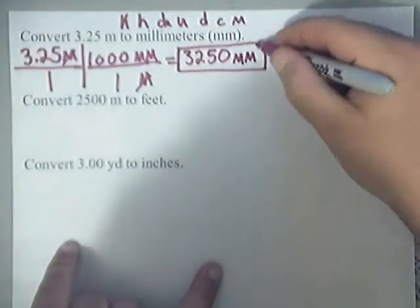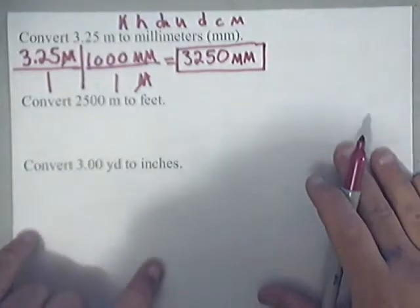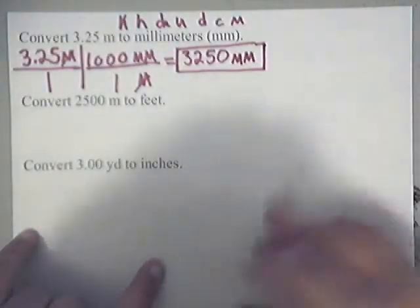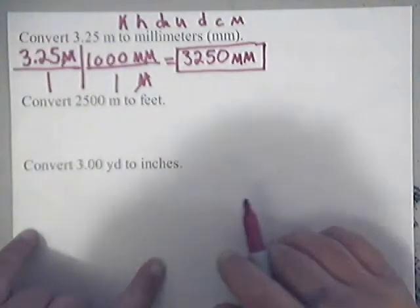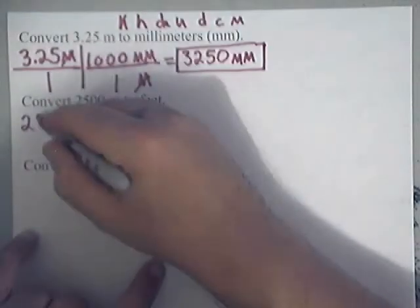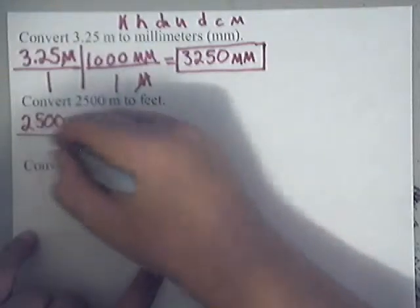Now, on the next one, we have 2,500 meters, and we need to convert that to feet. What you will do is this. You will write down the given, which is 2,500 meters, and put it over 1.